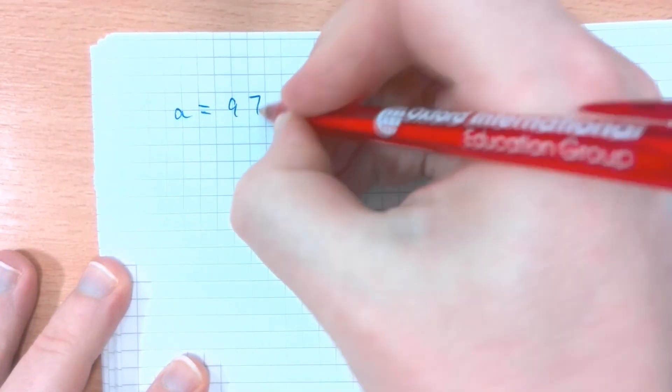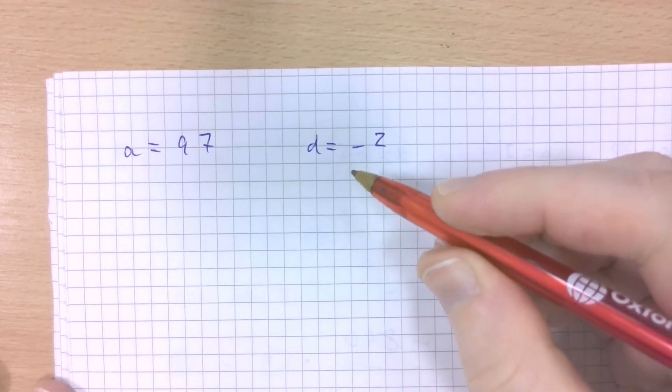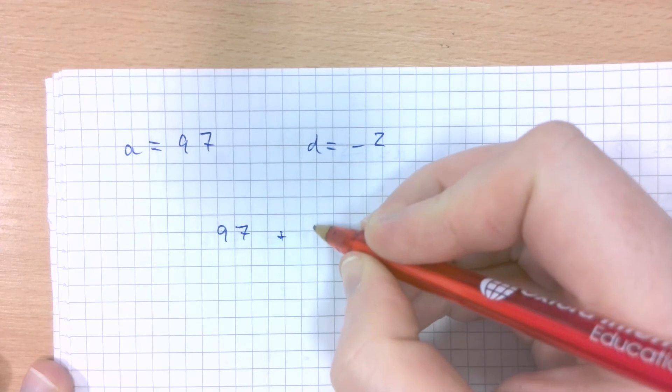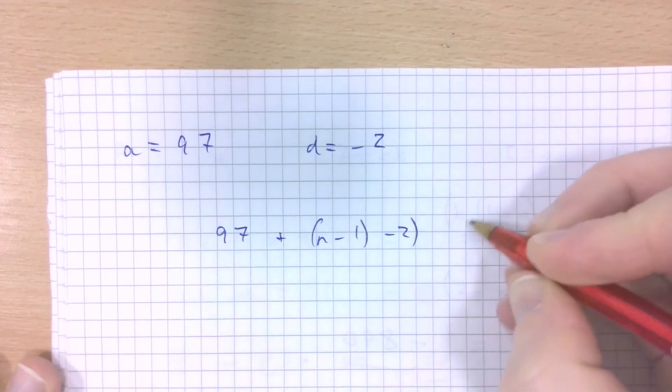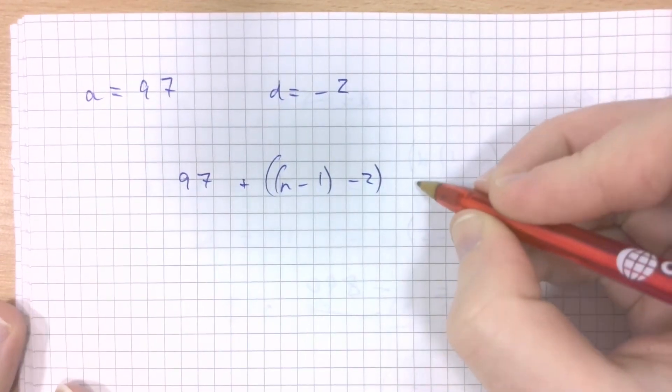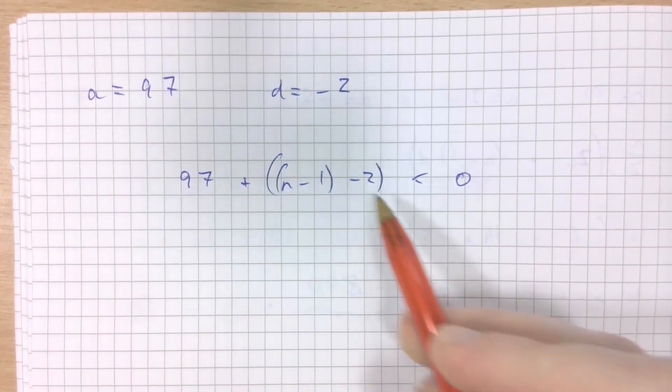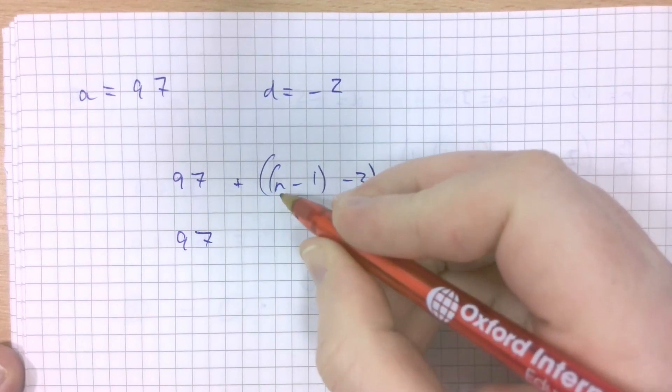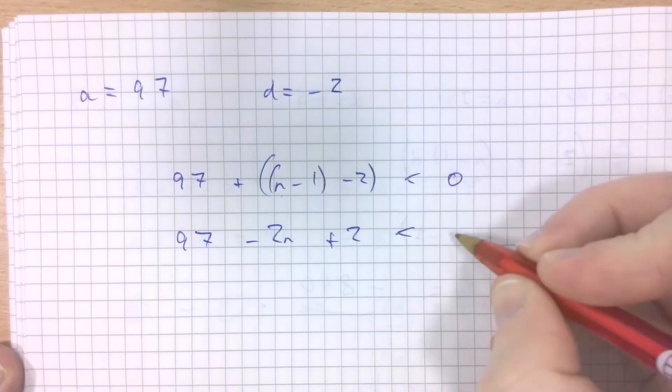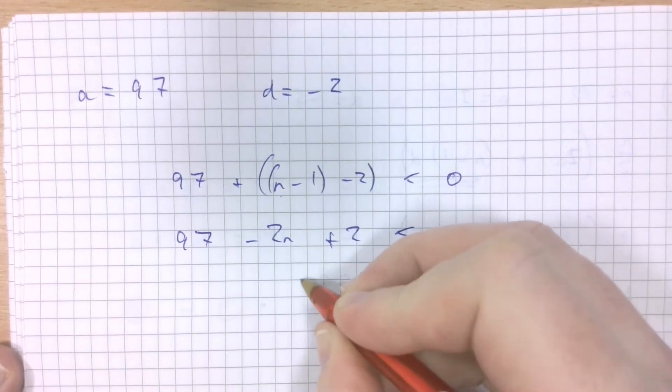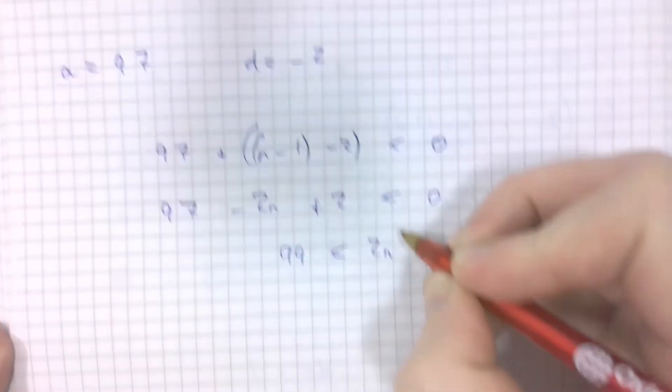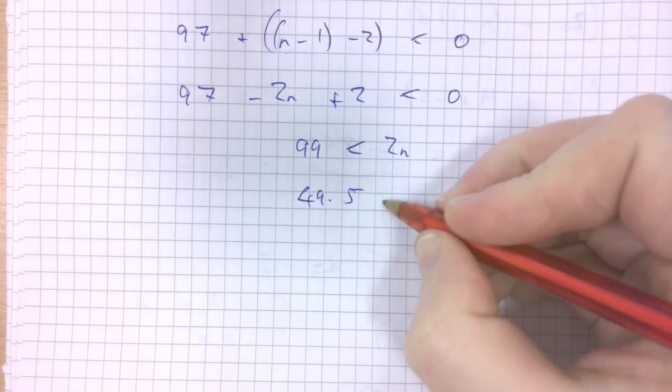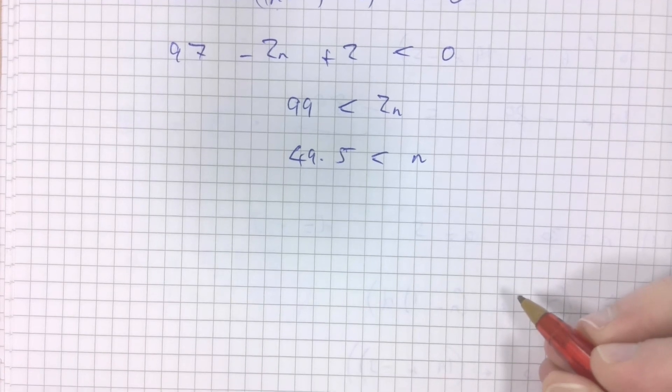What is the highest value it could possibly be? Well, we need to figure out, effectively, all of the positive numbers of this series. If it's going down by 2 every time, there's going to come a time where the series becomes negative. At what point does the series become negative? So 97 plus n minus 1 times negative 2. At what point does that become less than 0?